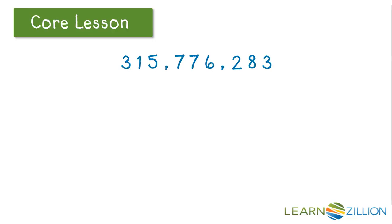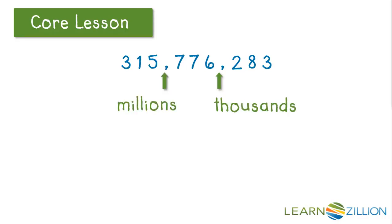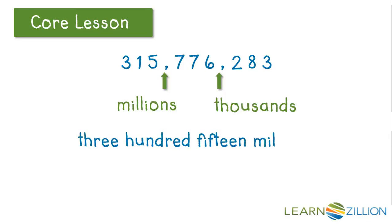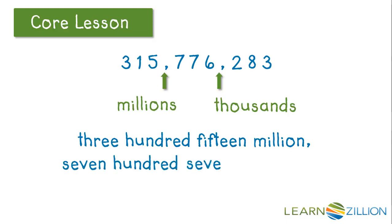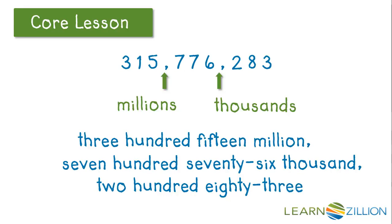Let's look at a number written without a place value chart. Remember, each period on our place value chart is separated by commas — we have our thousands and millions. So we will insert the words 'millions' and 'thousands' when we write this number in word form. We would begin with the 3 and have 315 million. Then we move to our next period: 776 thousand. And then finally, 283.